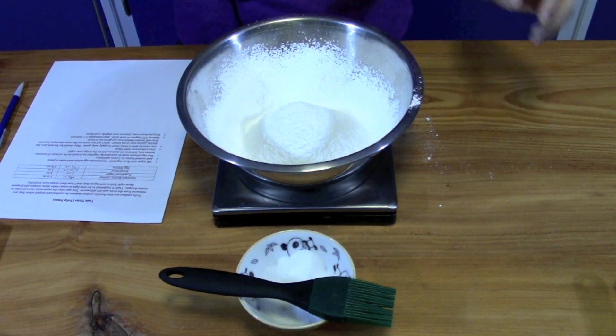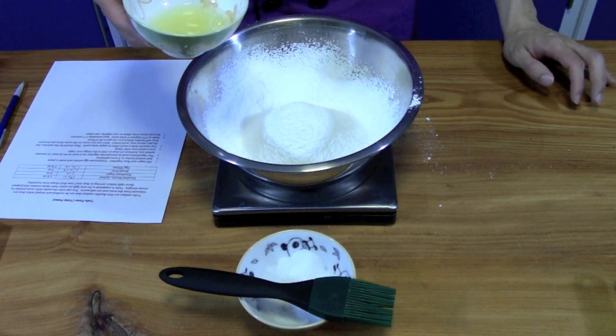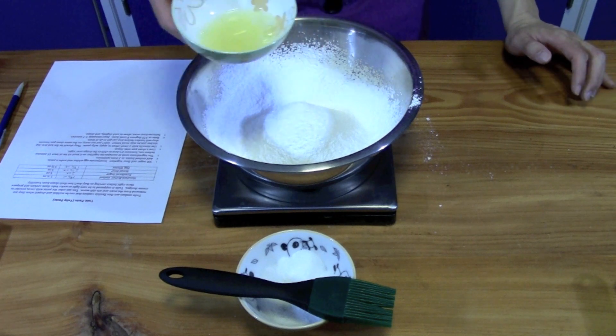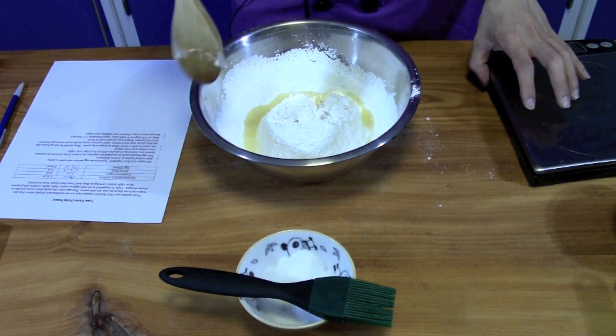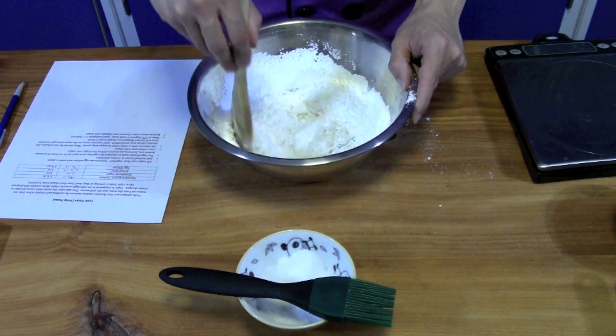Then we're going to add in one and three quarters ounces of egg whites. You can just use the leftover egg whites from your mint leaves. That's between one or two egg whites, depending on how large your eggs are. And we just want to go ahead and stir this together.